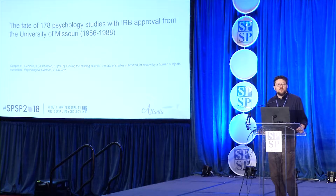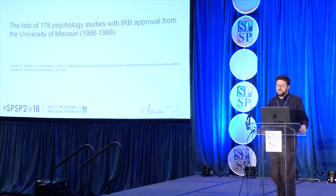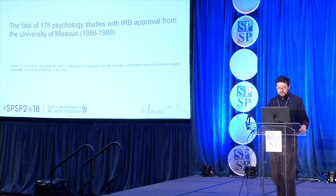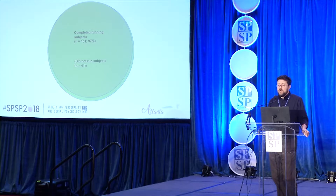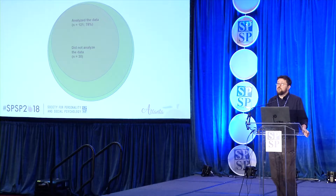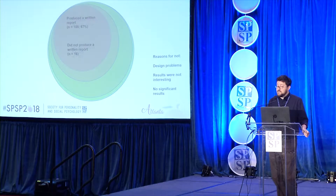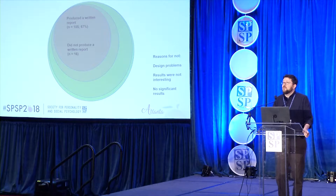Essentially, Harris Cooper and colleagues identified 178 studies that had been approved for IRB review in the Department of Psychology at the University of Missouri. They followed up with investigators to learn the fate of all the studies. Of those 178 studies, 155 actually began—data were collected from research participants. Of that 155, 151 reached completion. Of that subset, 121 reached the point where data were actually analyzed, and within that subset, 105 led to a written report.